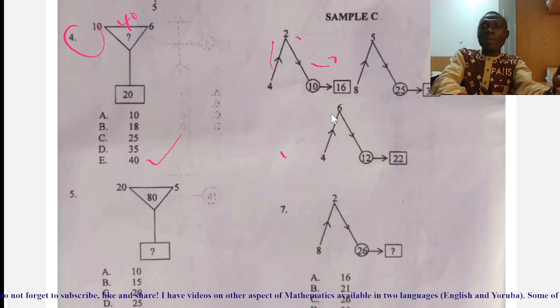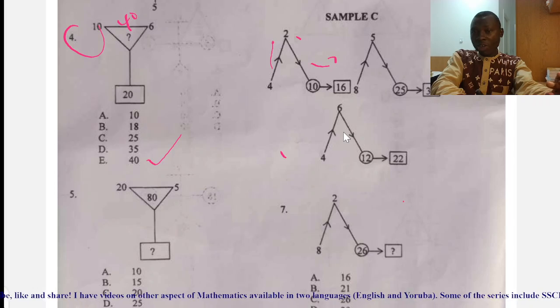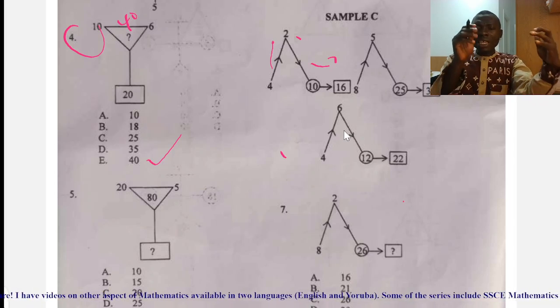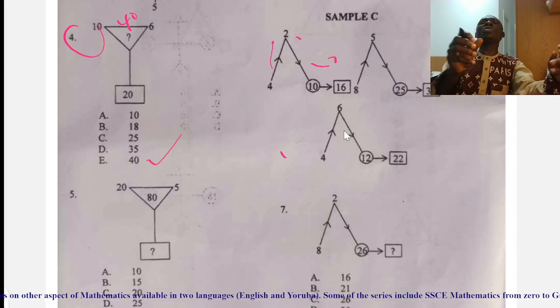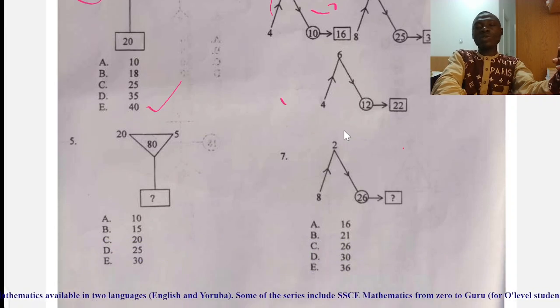What of this one? 4 plus 6 is 10. 10 plus 12 will give me 22. So, since you've established this rule, you now apply it to the rest of the situation.